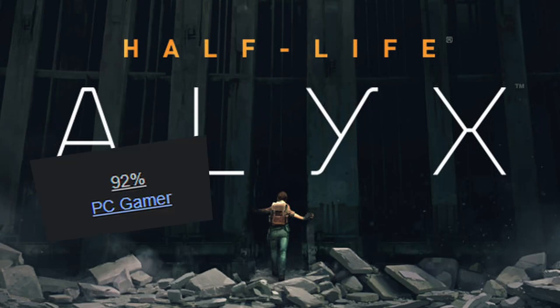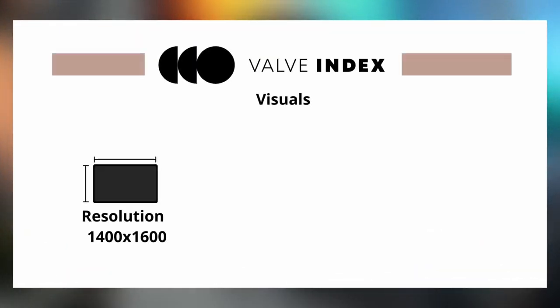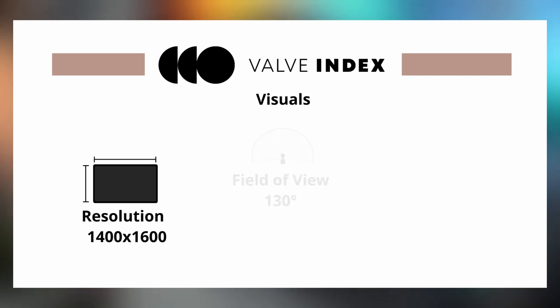Our second headset today is the Valve Index. The Valve Index is a PC VR headset that made huge waves in the industry when it released in June 2019, along with Valve's flagship VR game Half-Life: Alyx, which is still widely known by critics to be the best VR game to date. Because it's not a standalone headset, you will need a PC to run games. For visuals, the Index sports a resolution of 1400 by 1600 per eye with a field of view of about 130 degrees horizontally. This wide FOV is achieved due to the placement of your eyes closer to the lenses than other HMDs, which increases your field of vision.